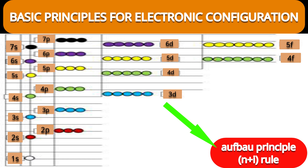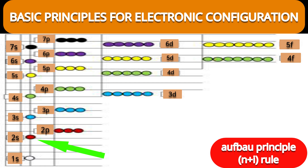What is n? n is the principal quantum number and l is the azimuthal quantum number. Applying n plus l to 1s: n = 1, l = 0 (for s), so 1 + 0 = 1. For 2s: n = 2, l = 0, so 2 + 0 = 2. Since 2 is higher than 1, the 2s orbital is of higher energy than 1s.